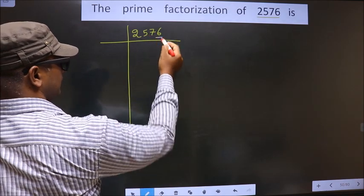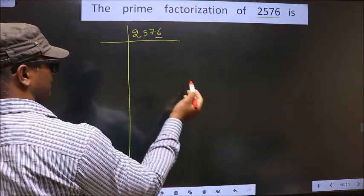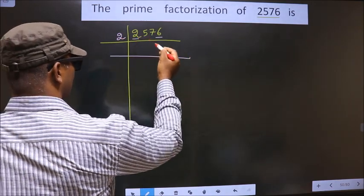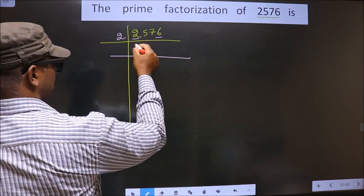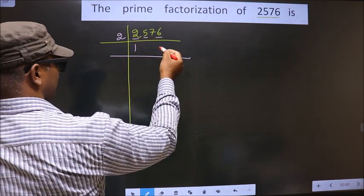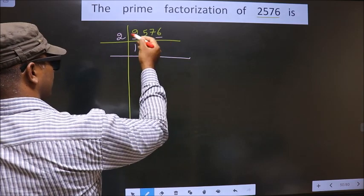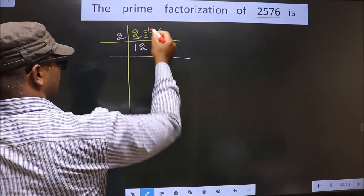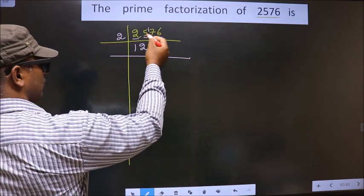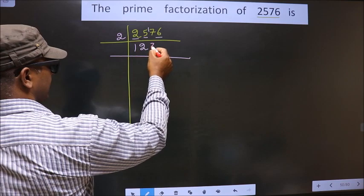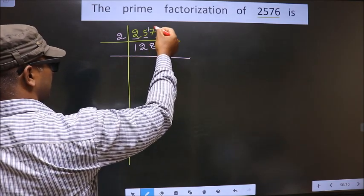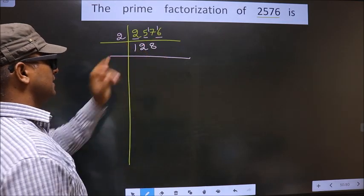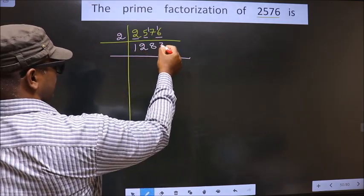For this number, the last digit is 6, which is even. So we take 2 here. First number is 2 — when do we get 2 in the 2 table? 2 times 1 is 2. Next number is 5 — a number close to 5 in the 2 table is 2 times 2 is 4. 5 minus 4 is 1, carried forward making it 17. A number close to 17 in the 2 table is 2 times 8 is 16. 17 minus 16 is 1, carried forward making it 16. When do we get 16 in the 2 table? 2 times 8 is 16.